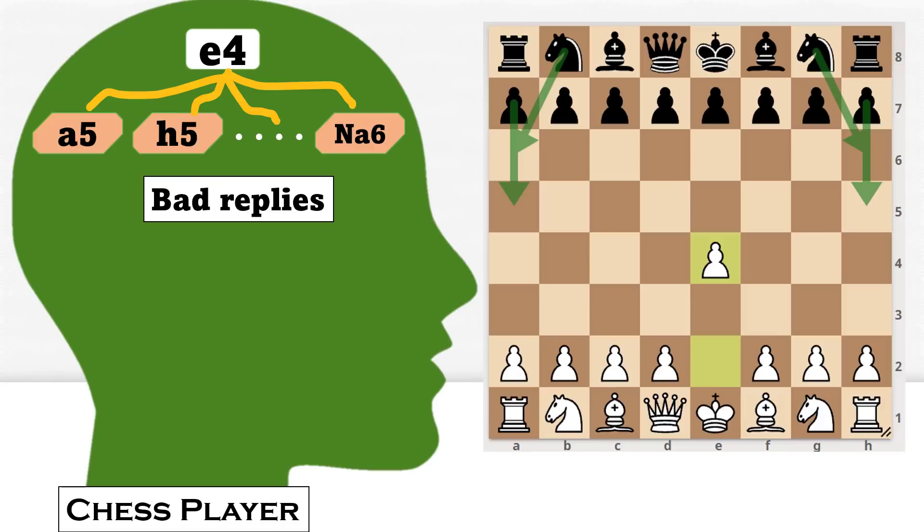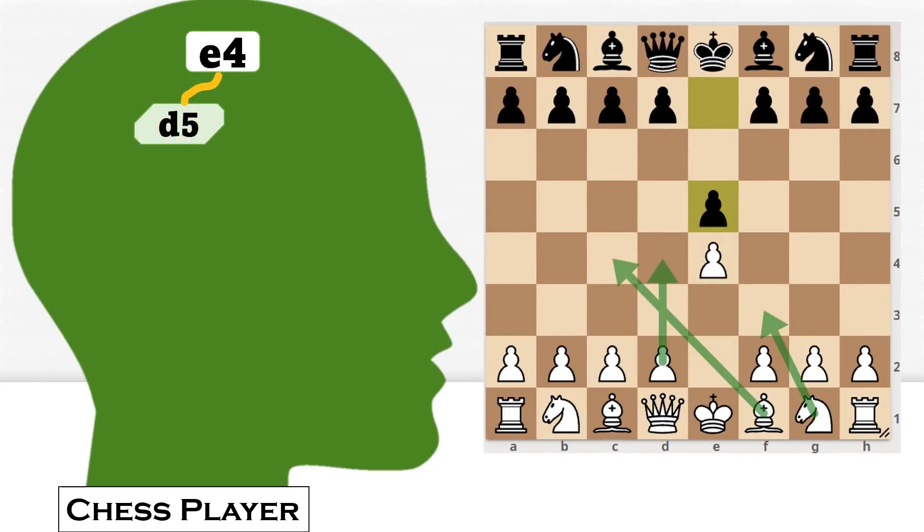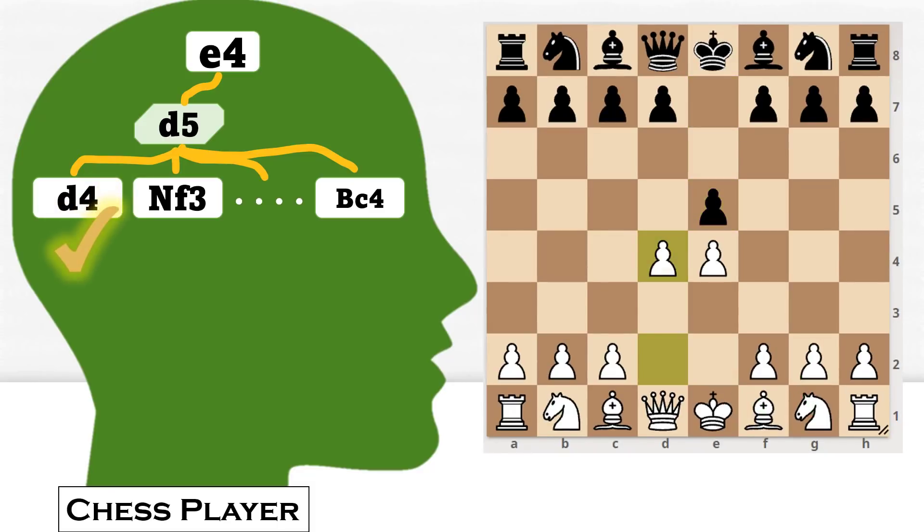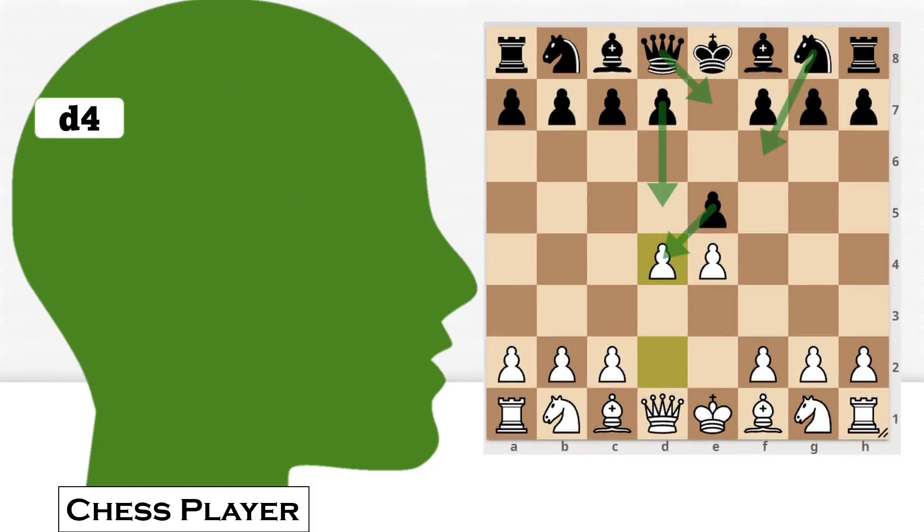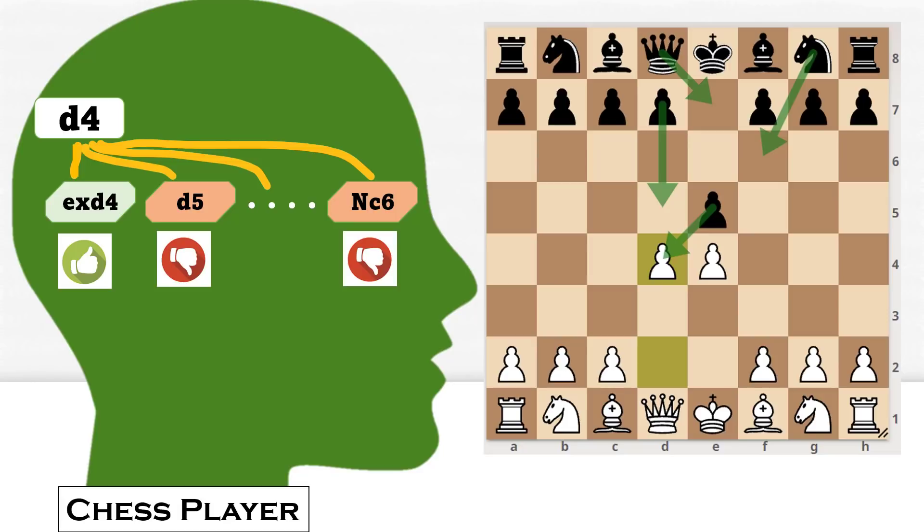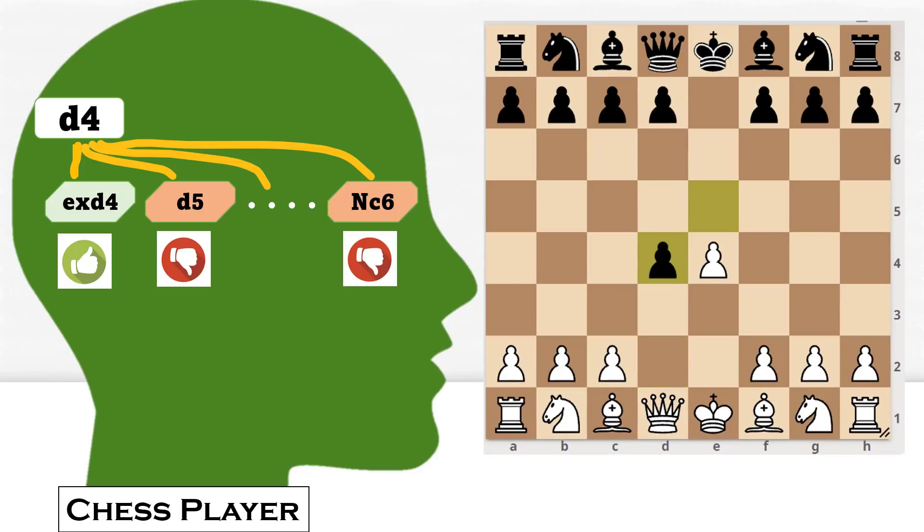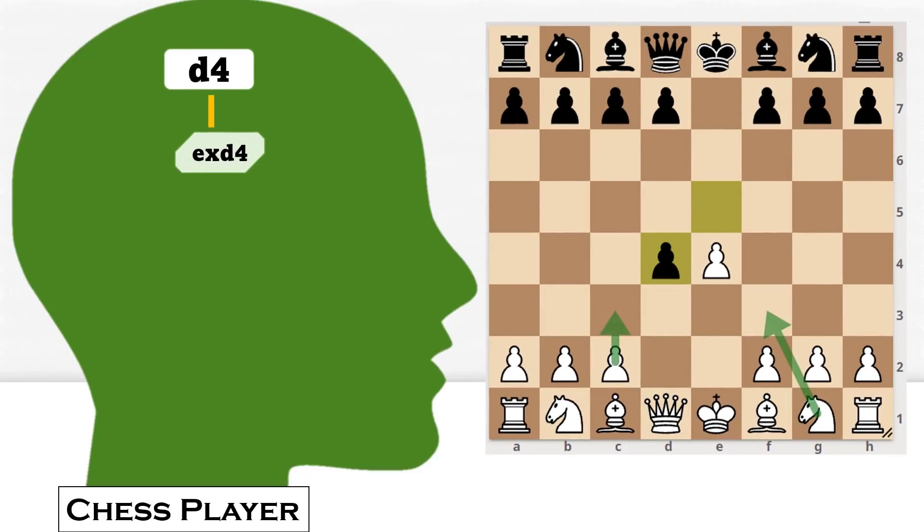For each possible reply, this player might already have thought of next candidate moves, and he would choose the best move according to himself. Again, he would think for the possible replies and give each reply a good or a bad remark in his own mind. Then the opponent replies with a move and this guy would continue the same process.